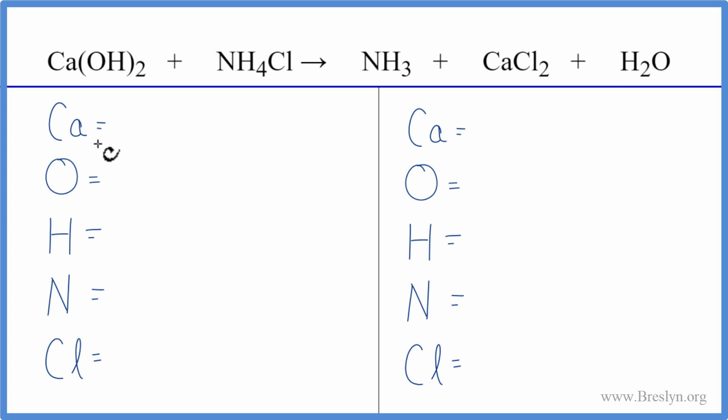Let's count the atoms up on each side of the equation. One calcium, two times the one oxygen, we have two of those. Two times the one hydrogen, we have two of those, plus we have these four hydrogens here. So we have a total of six hydrogen atoms. One nitrogen, and then one chlorine.